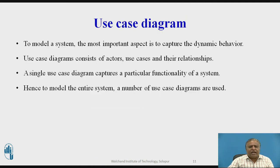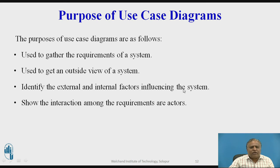The next topic is use case diagrams. To model a system, the most important aspect to capture is the dynamic behavior. A use case diagram consists of actors, use cases, and their relationships. A single use case diagram captures a particular functionality of a system, so to model the entire system, a number of use case diagrams are used. The purposes of a use case diagram are: to gather the requirements of a system, to get an outside view of a system, to identify external and internal factors influencing the system, and to show interactions among the requirements of the actors — that is, how internal and external actors interact with the system.